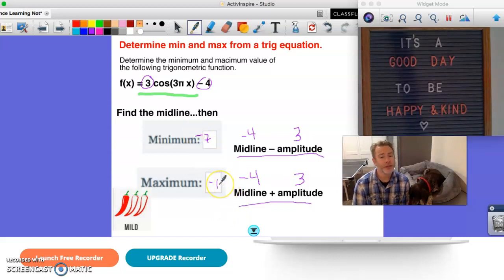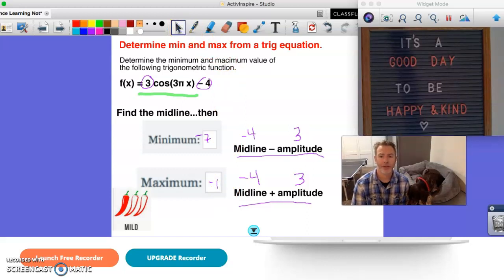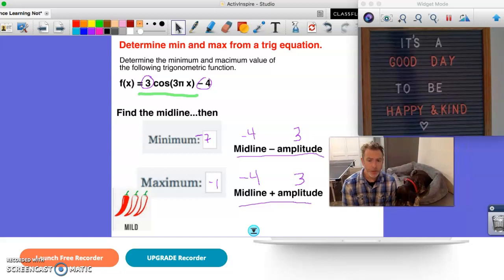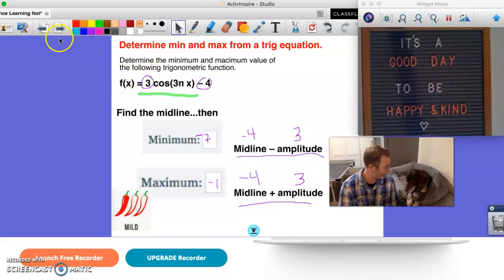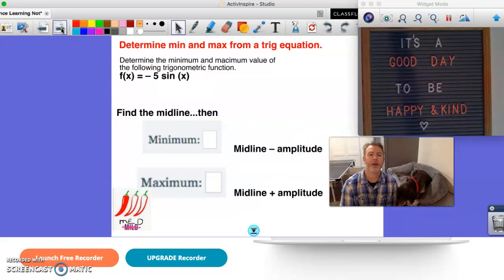What this allows us to do is it allows us to find these highs and lows on the graph before we actually graph it, which is going to be important. We do want to know where these highs and lows occur. And we can do that by looking at some of these features in the equation. Okay, Penny got excited here. So let's just move on to one more problem.